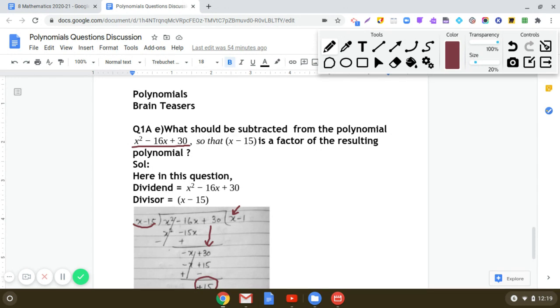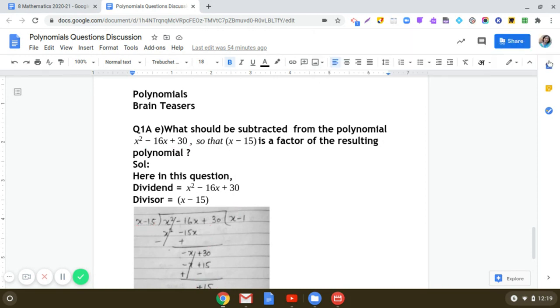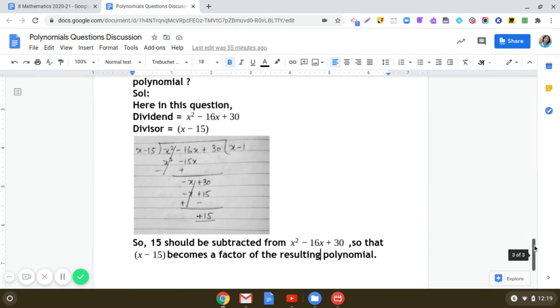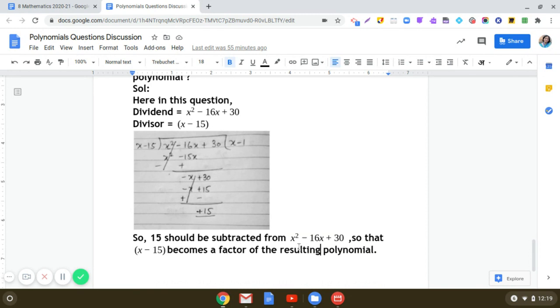The polynomial x² - 16x + 30 - 15, which equals x² - 16x + 15, will be completely divisible by x - 15. So the answer is: we need to subtract 15 from x² - 16x + 30 so that x - 15 becomes a factor of the resulting polynomial.